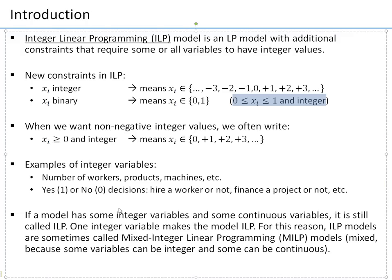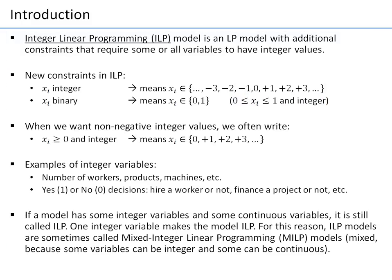It's important to remember that when a problem has many continuous variables but also some integer variables, it is already considered an integer linear programming problem. Even if you have 10 variables and only one is integer or binary, you still call it an integer linear programming model. Sometimes we call such models mixed integer linear programming models, to indicate that the variables are mixed — some continuous and some integer.